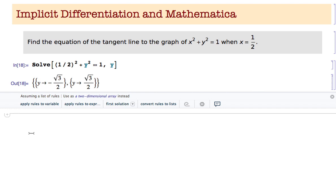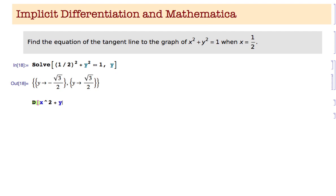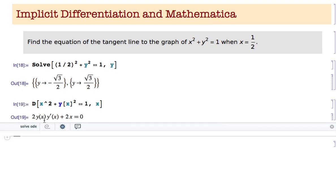The way you do implicit differentiation in Mathematica is: write D for derivative, then in brackets type x squared plus y[x] squared equals equals 1. You write y[x] — y as a function of x — not just y. This is what implicit differentiation means: we're implicitly assuming y is a function of x. Then differentiate with respect to x and hit Shift+Return, and Mathematica performs the differentiation.